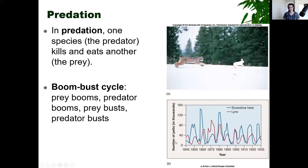We call that the boom-bust cycle. You're going to notice this in a lot of predator-prey relationships where predators feed exclusively on one type of organism. If they feed on many different types of organisms, this might not happen. But in this case, the lynx's main source of food is snowshoe hares in whatever region this is.